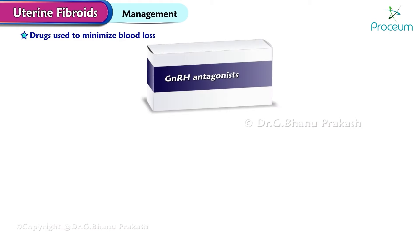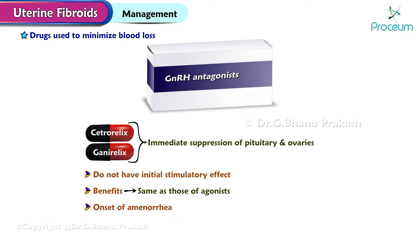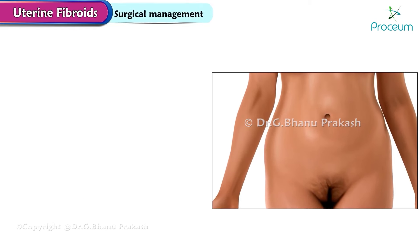GnRH antagonist: cetrorelix or ganirelix causes immediate suppression of the pituitary and the ovaries; they do not have the initial stimulatory effect. Benefits are the same as those of agonists; onset of amenorrhea is rapid.